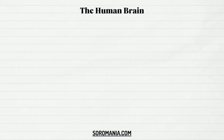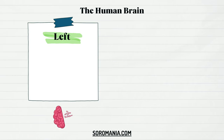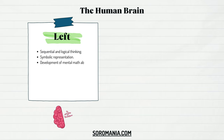The human brain is divided into two hemispheres — the left hemisphere and the right hemisphere — connected by nerve fibers called the corpus callosum. While each hemisphere controls the opposite side of the body and performs different functions, they work together to process information and perform complex tasks. The left hemisphere is commonly linked with analytical thinking, logical reasoning, and language processing, all vital for acquiring knowledge and executing mathematical activities. The Soroban actively involves the left hemisphere through sequential and logical thinking, symbolic representation, development of mental math abilities, and strengthening connections between brain regions.